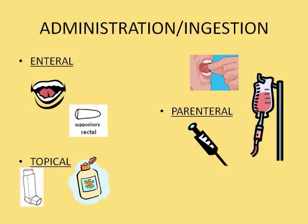Systemic drugs can also be given topically — we're talking about lotions and creams, patches such as some of the contraceptive patches and the patches that people use for heart medication. Another form of topical medication is inhalers, typical of use with asthma.